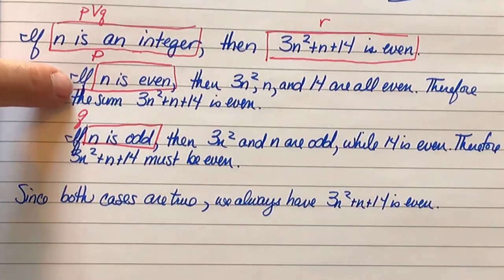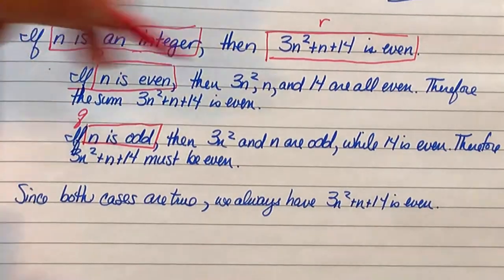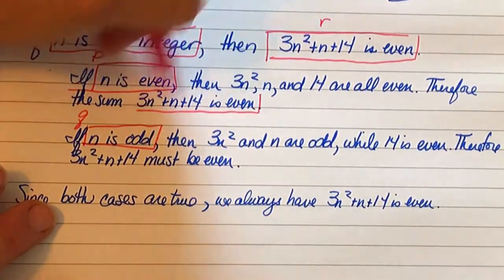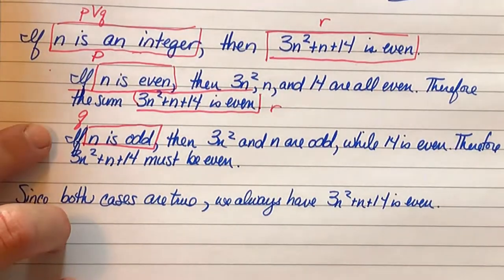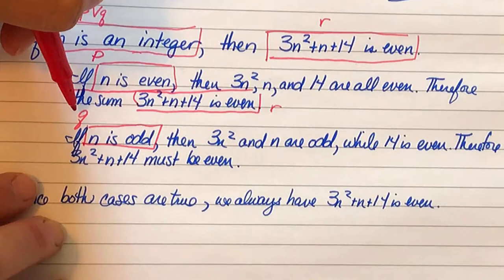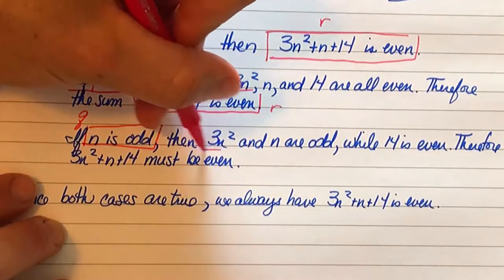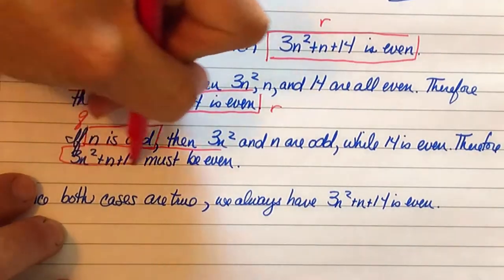These two pieces are where we prove if p then r, because down here is r. And down here we prove if q is true, then r is true. And here is r again.